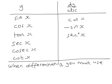If you differentiate sec x, we get sec x tan x. If y is cosec x, dy/dx is minus cosec x cot x.